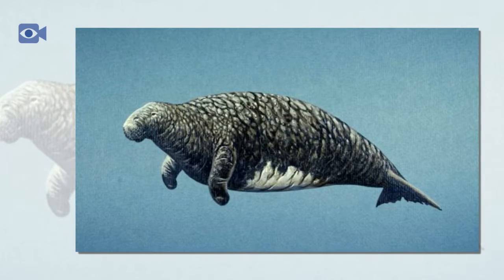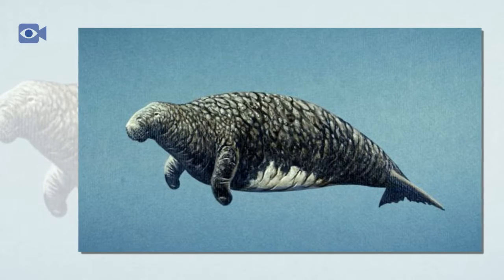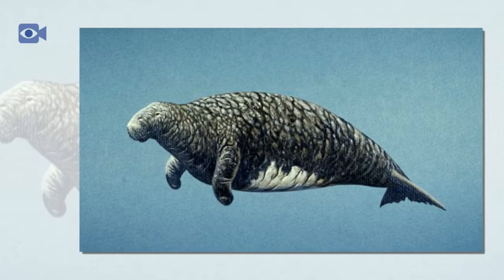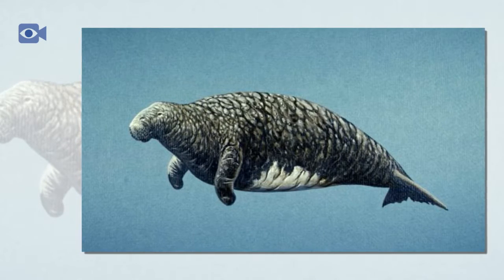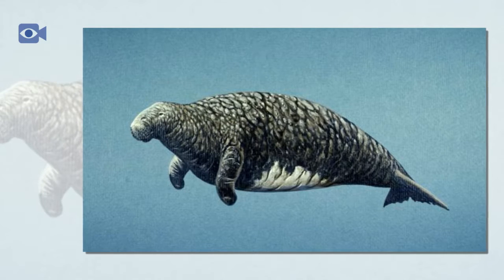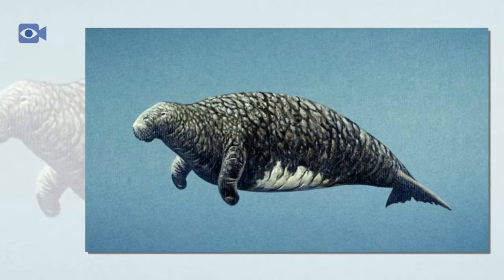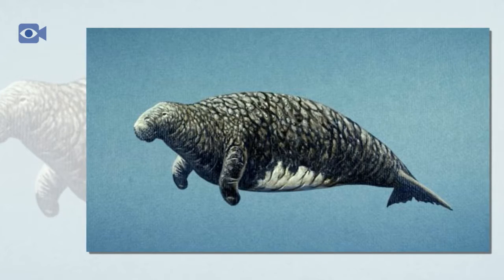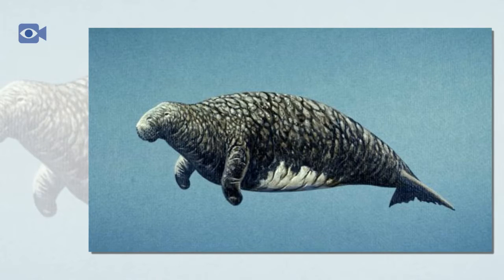The Steller's sea cow would have mated and given birth to its calf in the water, as these marine mammals do not go on to the land. In much the same way as its smaller cousins, the female Steller's sea cow would have given birth to a single calf after a gestation period that probably lasted well over a year. The sea cow calf would have remained with its mother until it was strong enough to become independent.